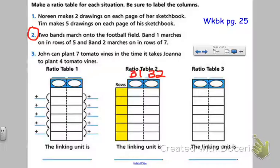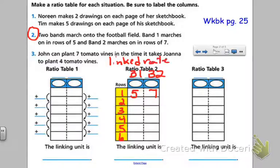Band one marches on in rows of five, so band one is going to start at five — five people in a row — and band two will have seven people in a row. This unit column is going to show me the number of rows. This is actually a linked rate table because it has that extra column that shows the linking unit. The linking unit is the rows — that hidden column that links the two other columns together.